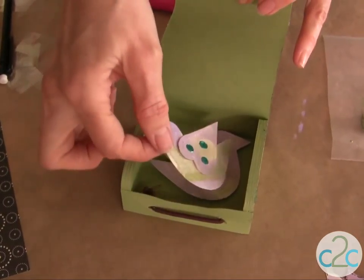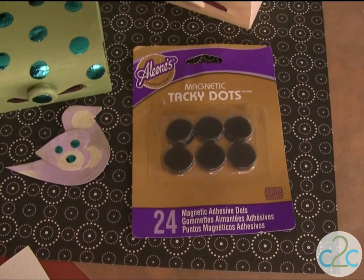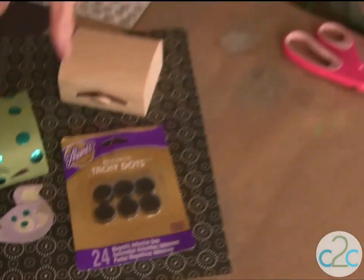So cover your entire box with your dots and then you can just put your little giftable magnets right inside and you can see on the wings I also use the small tacky dot singles to put the same foil.